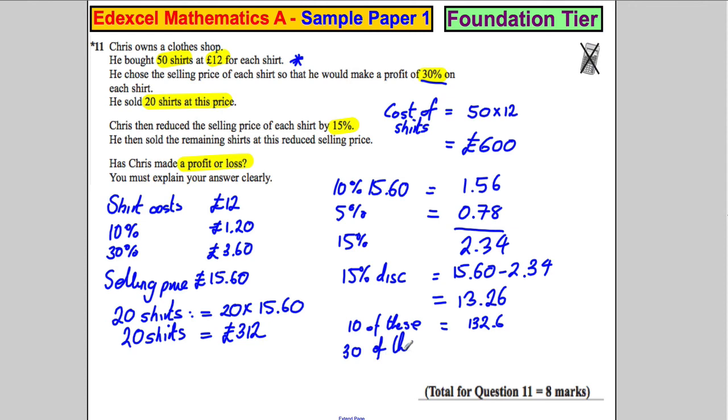So 30 of these would be 3 times that. 3 times 100 is 300, 3 times the 30 would be 90, 3 times the 2 would be 6, so it would be 396, and 3 times 60p is £1.80, so it would be £397.80.